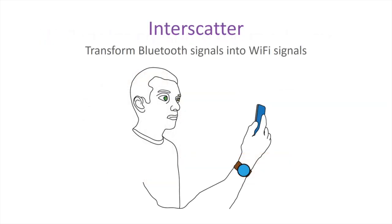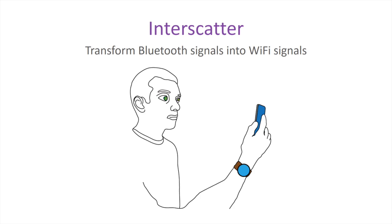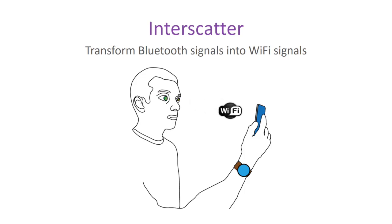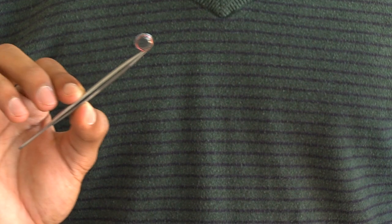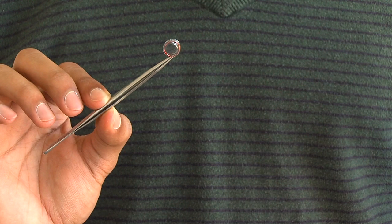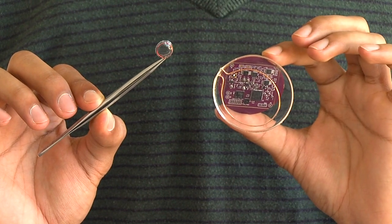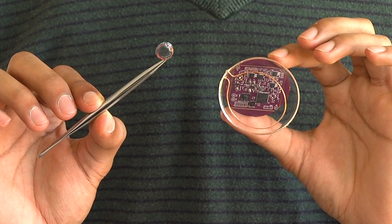InterScatter transforms Bluetooth signals into Wi-Fi transmissions by using only reflections. Say that a user has a smartwatch and a smartphone. InterScatter simply absorbs or reflects Bluetooth transmissions from the smartwatch and transforms them into Wi-Fi packets with their own data. Here we show a contact lens form factor antenna and an antenna for implanted brain-machine interfaces.